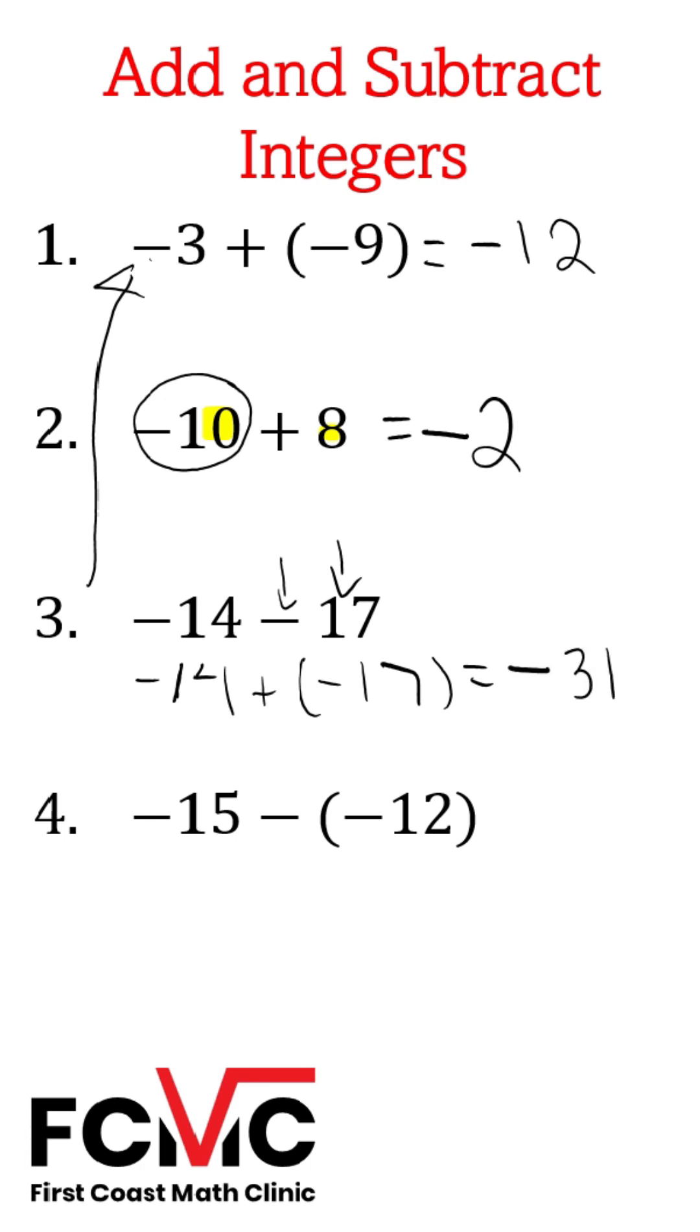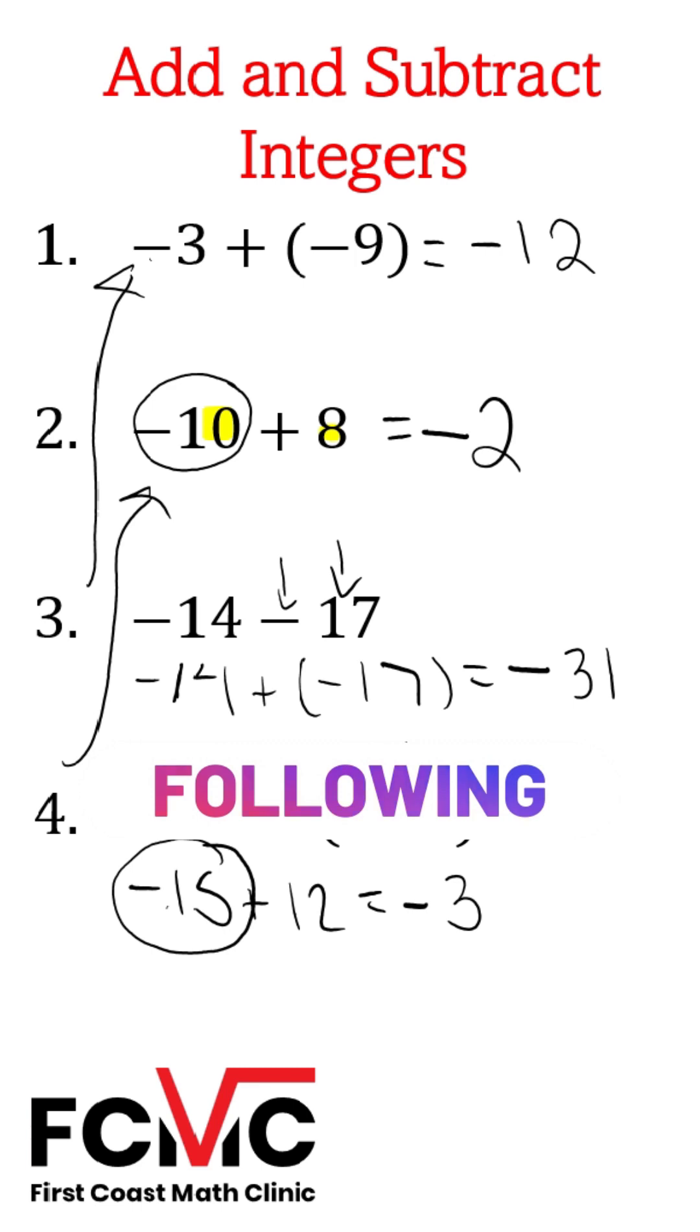Number 4, negative 15 minus negative 12. Use our subtraction rule. Keep the first term, change subtraction to addition, take the opposite of the second term. So that becomes positive 12. Now we have the same thing as number 2. We want the difference of 15 and 12. Difference is 3. Which of these two numbers has a larger absolute value? It's further from 0. That's going to be our negative 15. So the sign of our answer is negative 3.